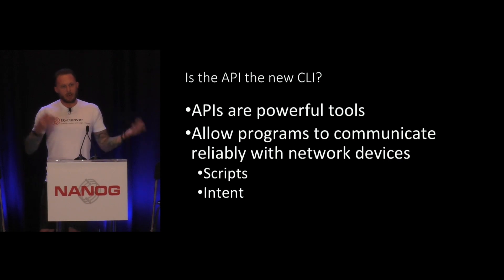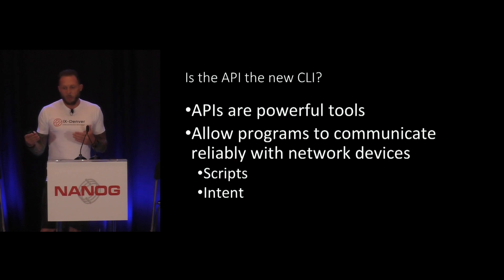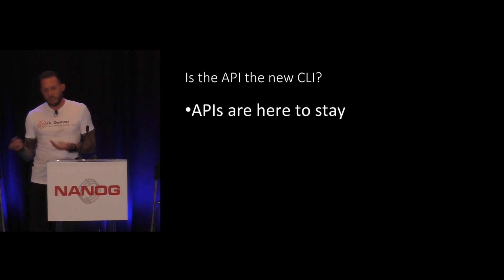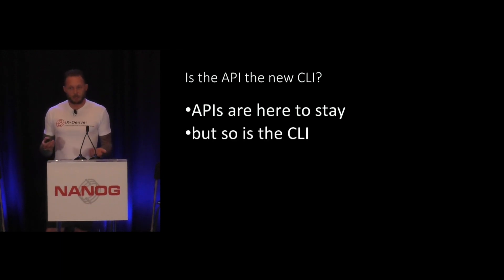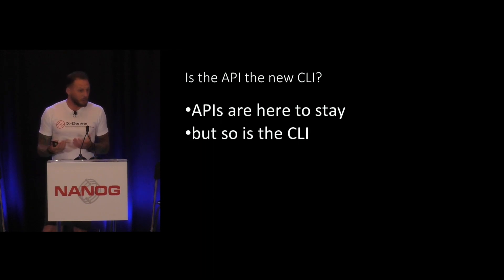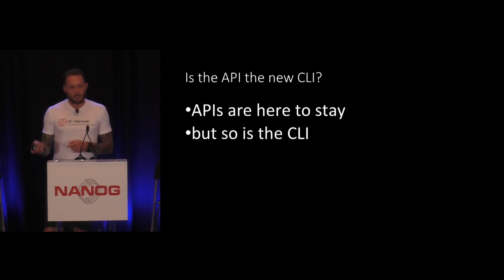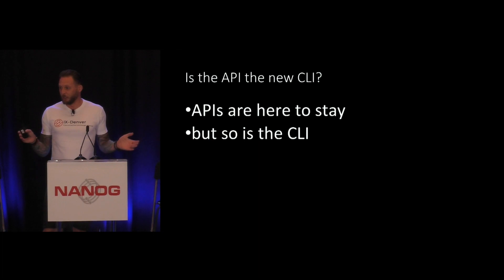Going back to that first idea: APIs are really for software to talk to software, whereas CLIs are still there for people to talk to machines. APIs are here to stay, but so is the CLI. In situations like intense troubleshooting, there will still be a CLI for a long time. But for routine day-to-day work, more and more you'll be using an API and some software to interact with your devices rather than directly logging into each machine — especially as you scale.